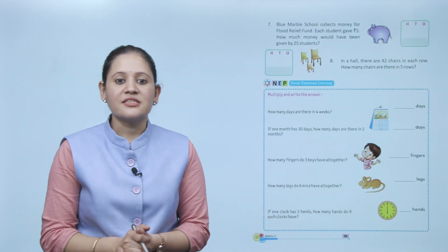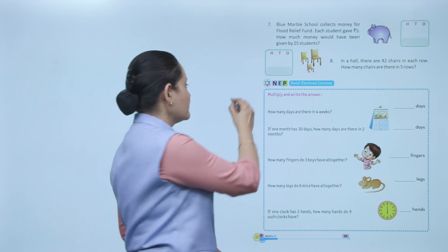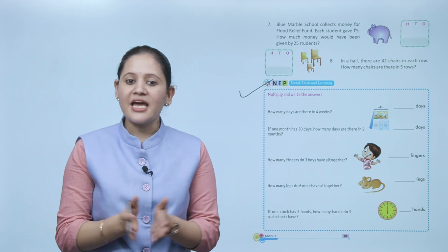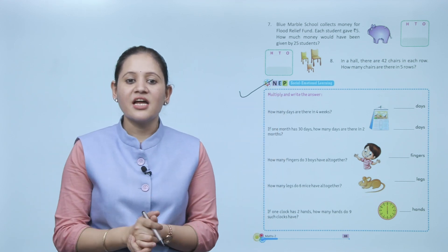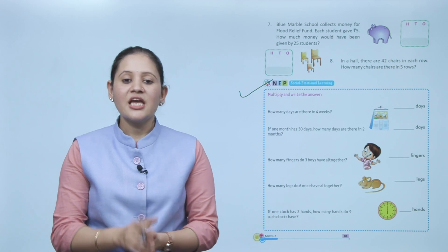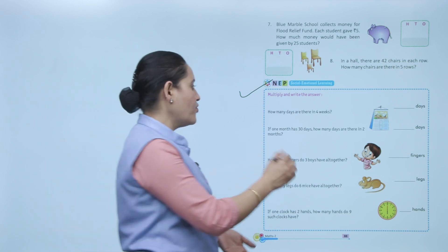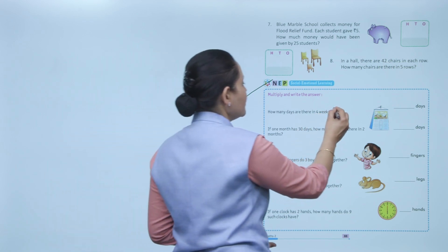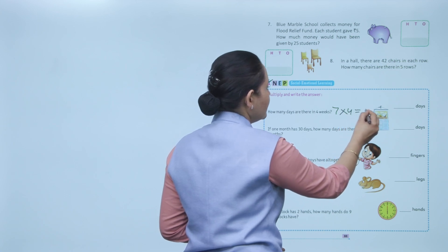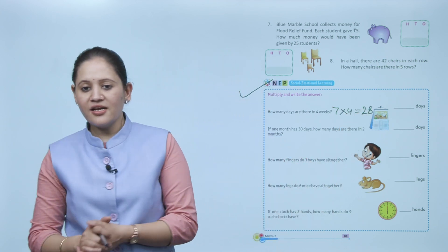Next: social emotional learning. Multiply and write the answer. How many days are there in four weeks? In one week there are 7 days, so in 4 weeks: 7 into 4 equals 28 days.